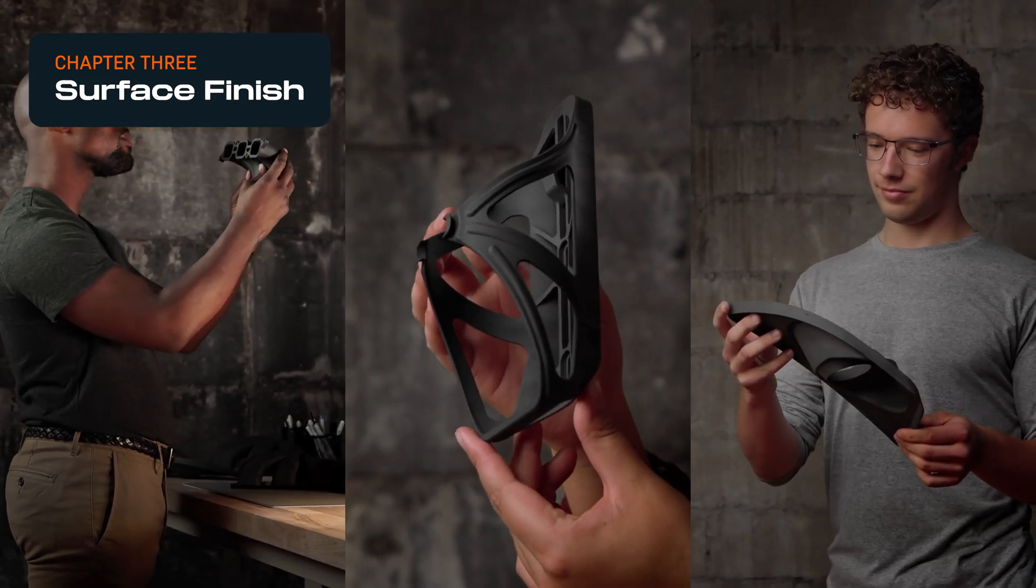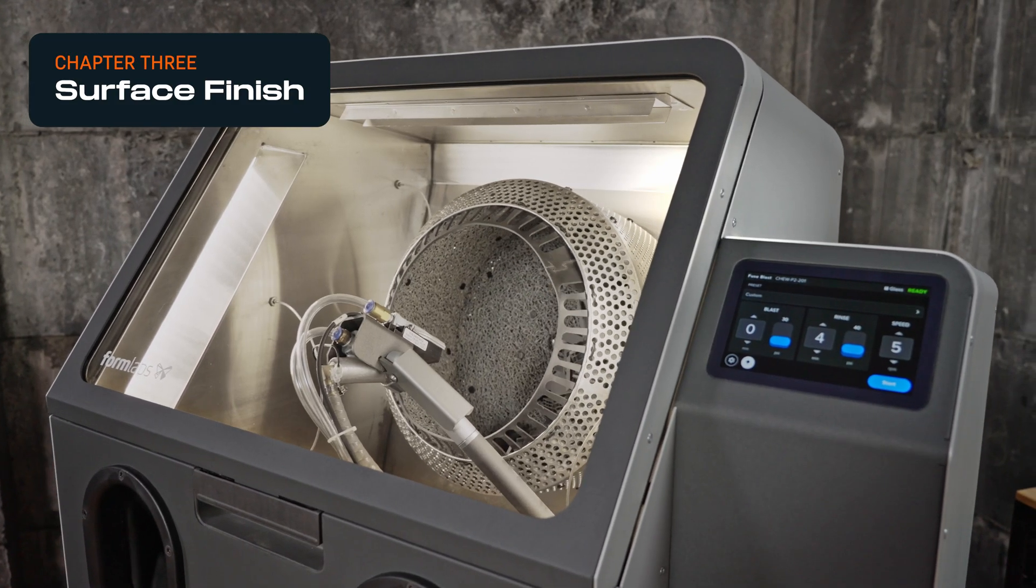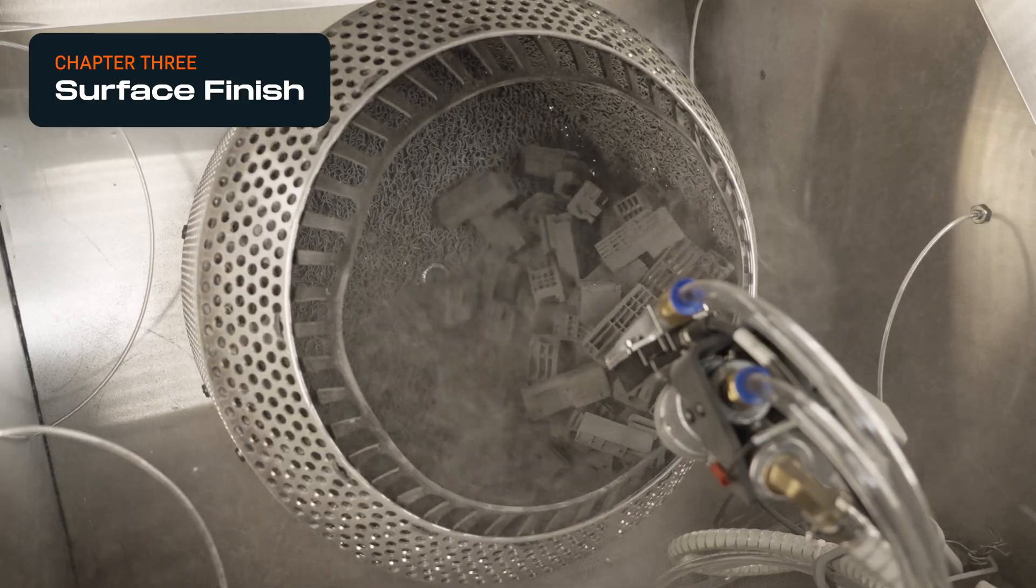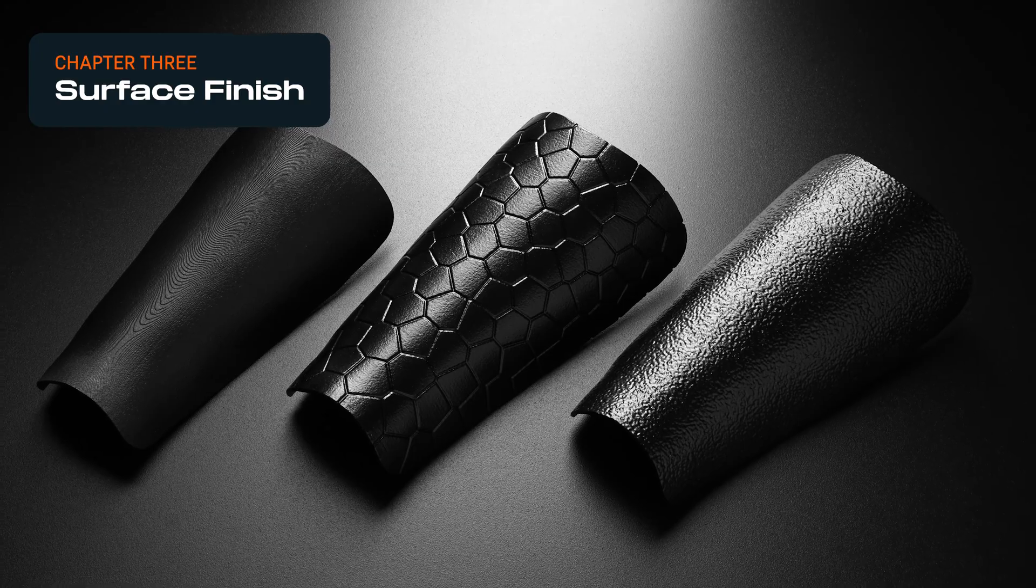For all technologies, surface finish can be improved with post-processing solutions like media blasting and polishing, and parts made in some FDM and SLS materials can be vapor-smoothed with solvents for a glossy, smooth finish.